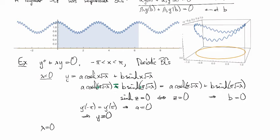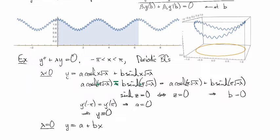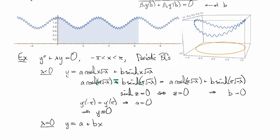All right, what about if we take lambda to be 0? So in this case, the general form for the solution is a plus bx, linear polynomial. And then if we evaluate this at minus pi, and that's equal to when it's evaluated at pi, then again, this tells us that b is equal to 0. And so then y has to be equal to the function a.